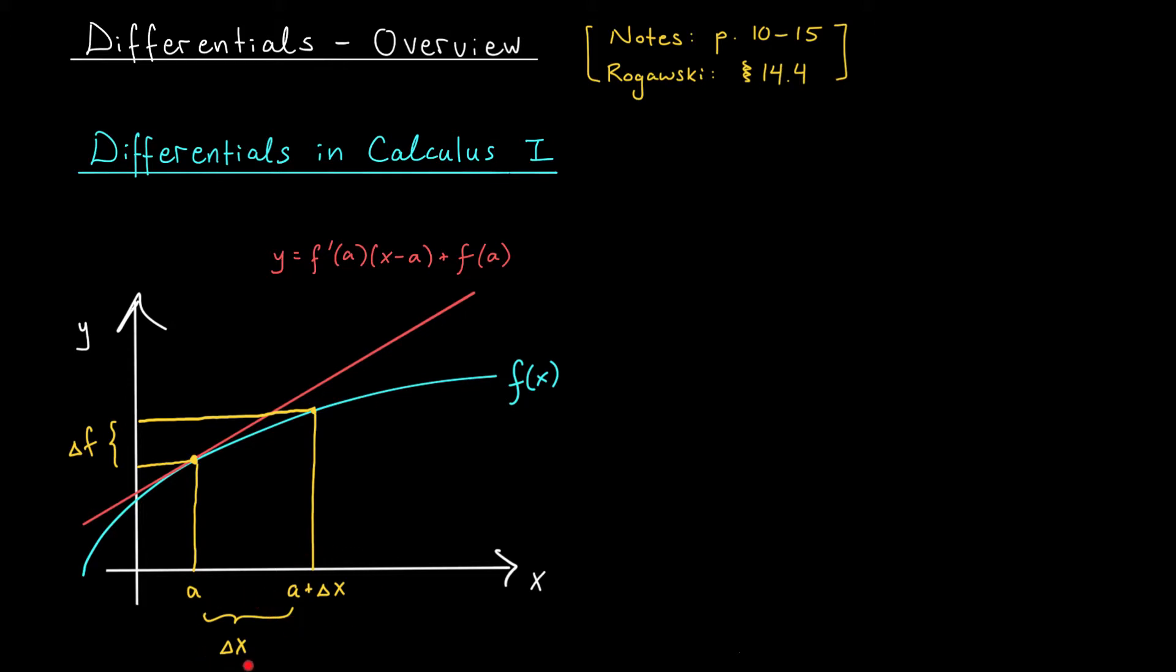Instead, we can notice that as long as this change delta x is really small, then the value of my function at a plus delta x will be very close to the value of my tangent line at a plus delta x. So as long as we're willing to settle for an approximation, we can estimate the change in our function's value by estimating the change in the height of the tangent line.